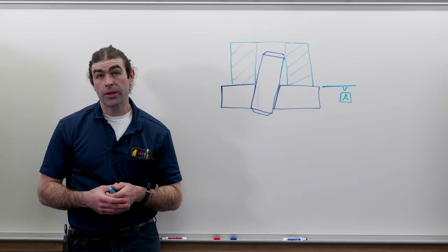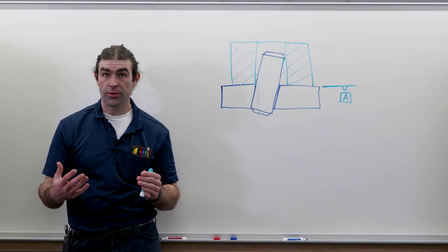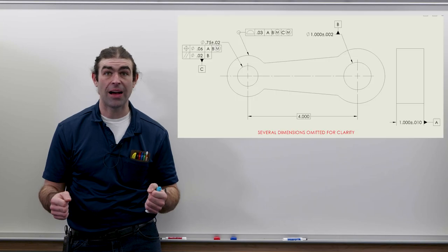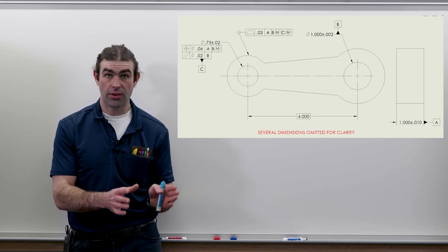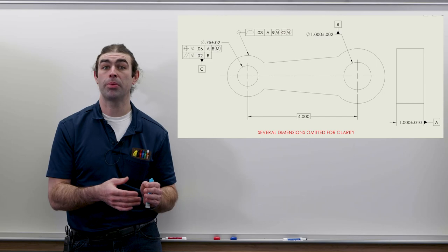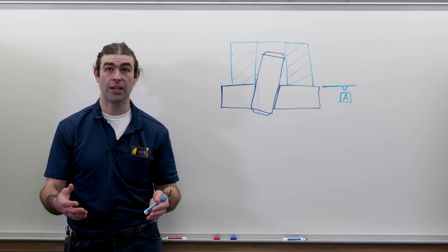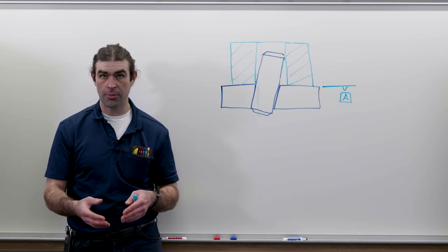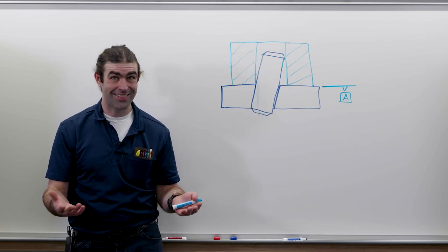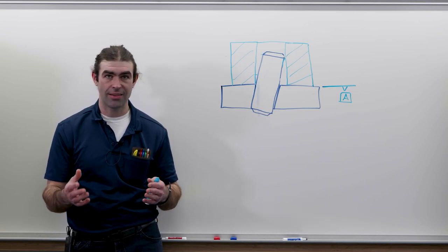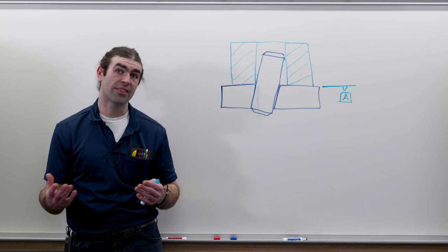Parallelism applied to a feature of size applies only to axes. You'd see it with two cylinders — like a connecting rod for an engine — where there's a basic dimension between them. You'd have a position tolerance on one and a parallelism tolerance refining it. It's not super common because composite position achieves the same thing. Similarly, parallelism with a profile is possible, but profile alone does the same thing. There are certain areas where you could use orientation, but position or profile essentially accomplishes the same result.